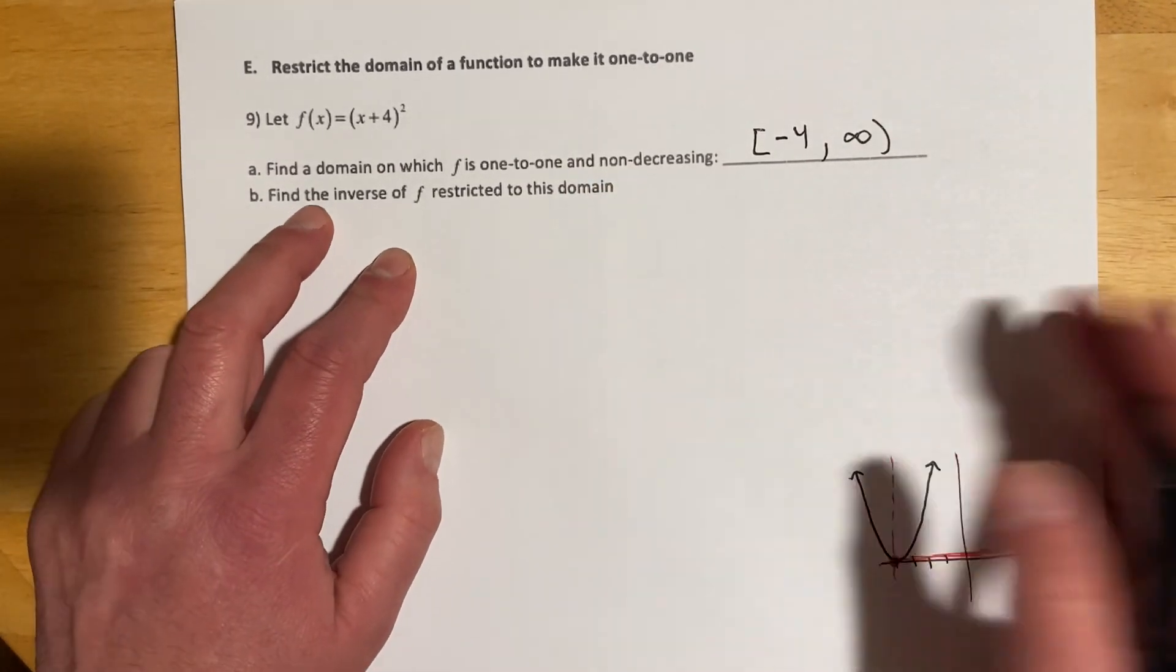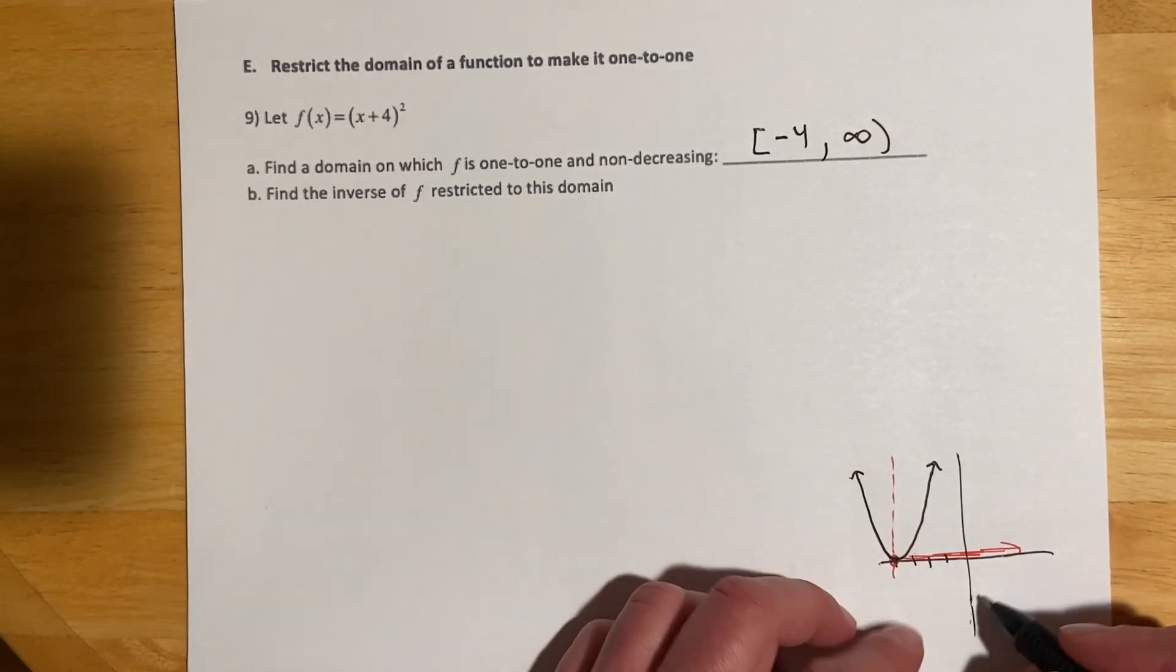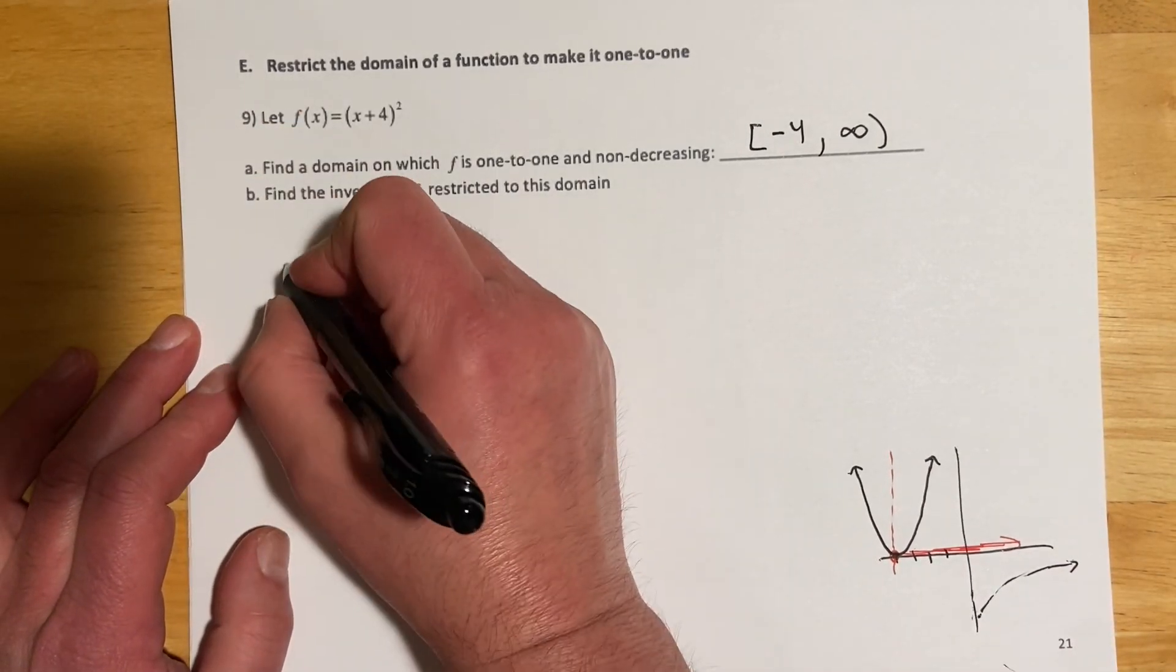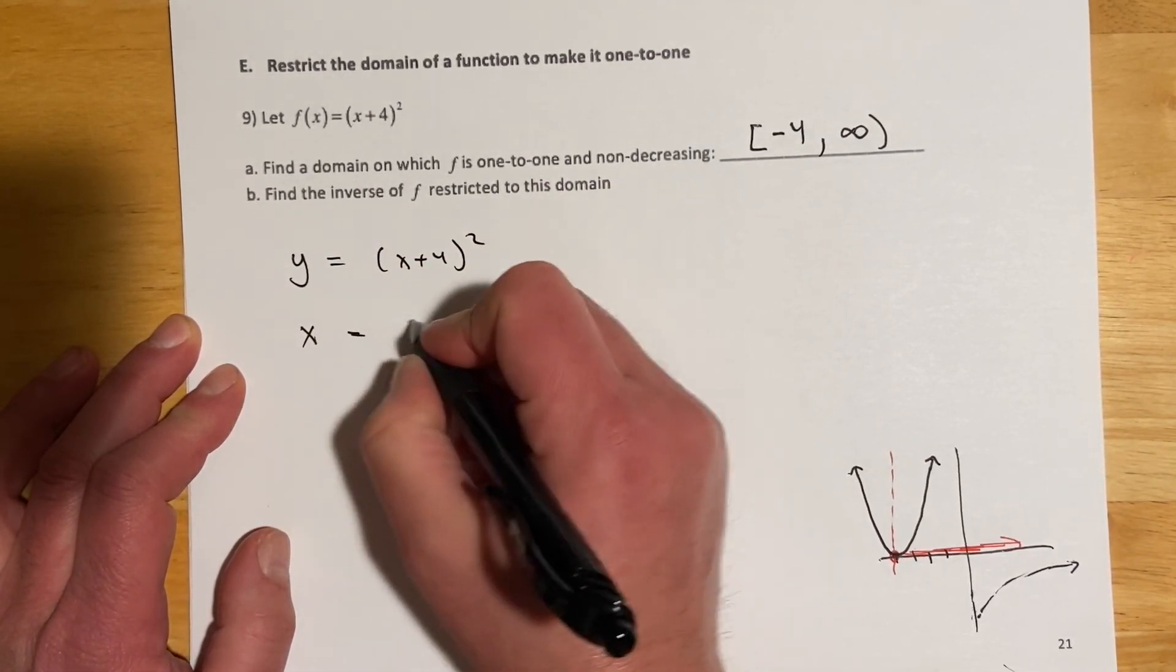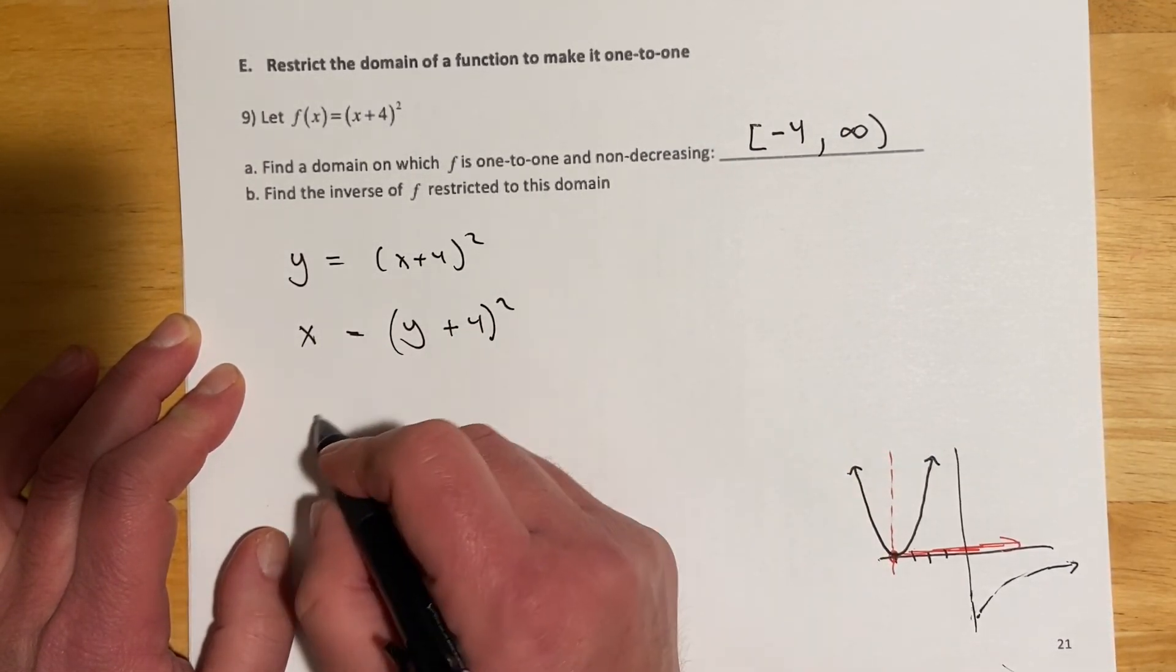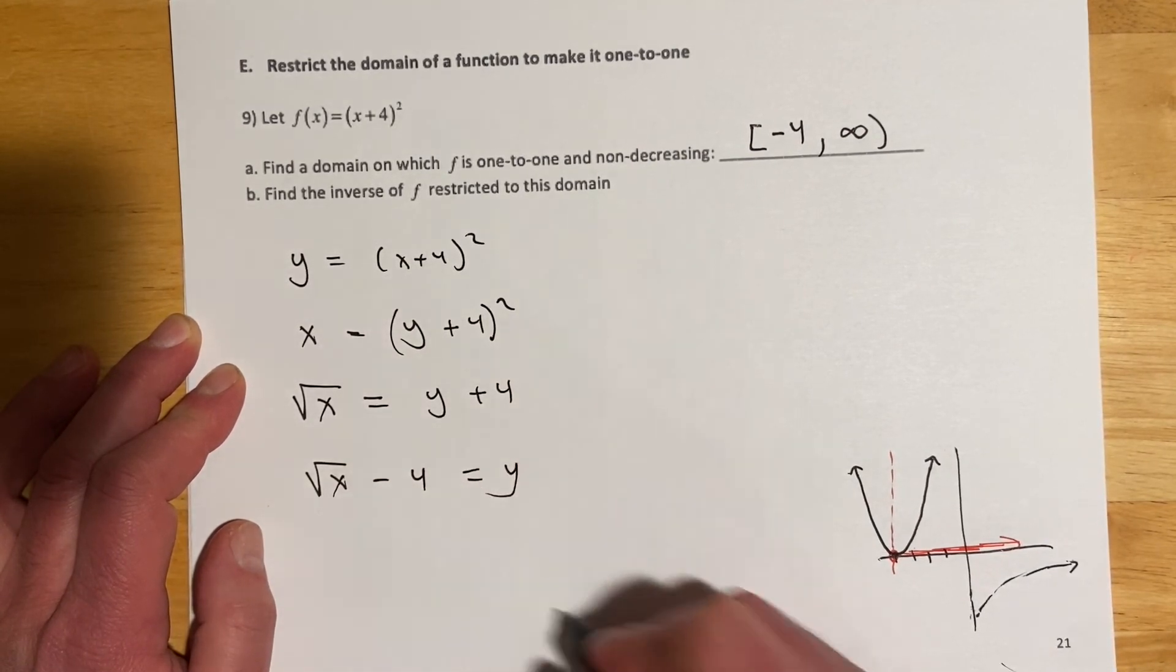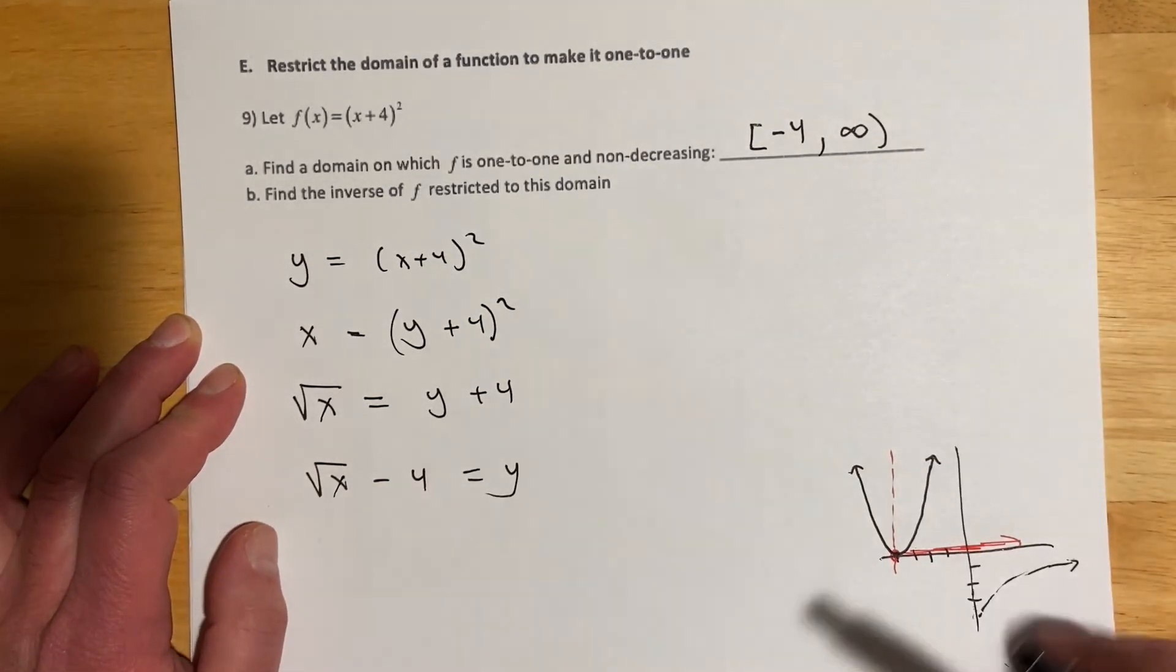Find the inverse of the function restricted on this domain. When I do that, what I should get is something that we don't have to graph it, but what I should get is something down here that's still a function that doesn't have that bottom half. We'll go y equals x plus 4 squared, swap our x and y, x equals y plus 4 squared, root both sides to get rid of the square, and then subtract over the 4. That's exactly what we saw, we got root x shifted down 4 units.